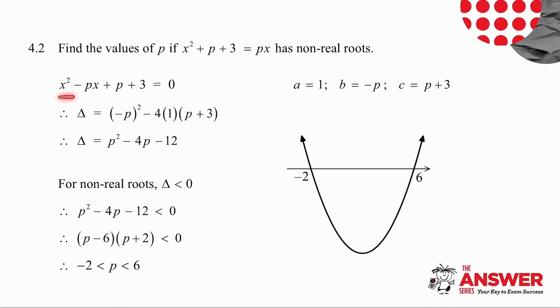The first thing I do is write my equation in standard form. a is the coefficient of x², b is the coefficient of x, and c is every term that doesn't have an x in it. I work out delta, which is b² - 4ac, and I simplify. For non-real roots, I know that delta has to be less than 0. So I take what I've worked out for delta and I make it less than 0.